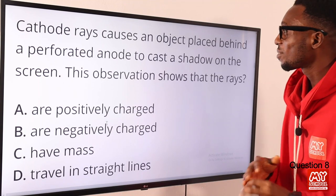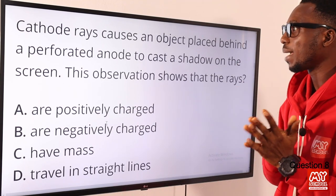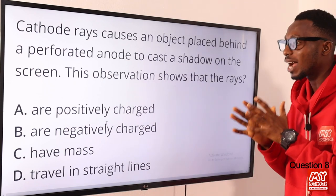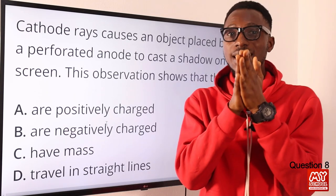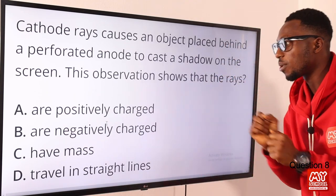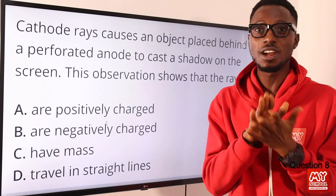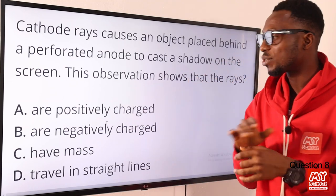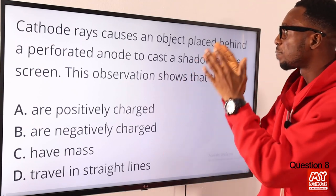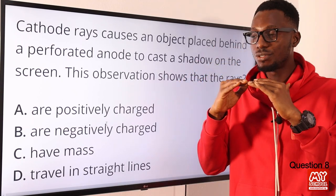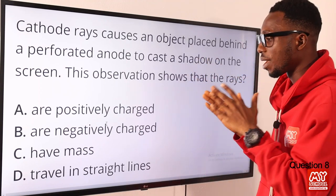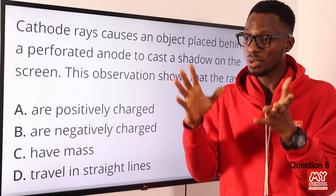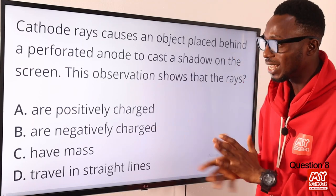Question 8: cathode rays cause an object placed behind a perforated anode to cast a shadow on the screen. This observation shows that the rays travel in straight lines, especially in vacuum. Other properties of cathode rays include travelling from cathode to anode, deflection in magnetic and electric fields, and being negatively charged. The key inference here is that cathode rays travel in straight lines, casting sharp shadows. So option D is the correct option.